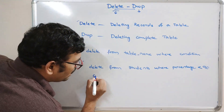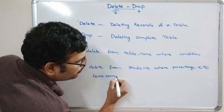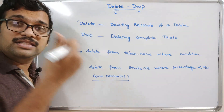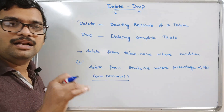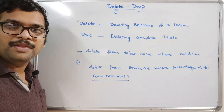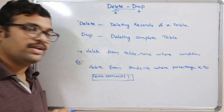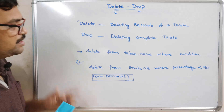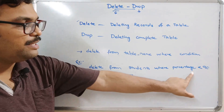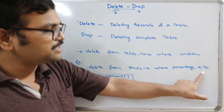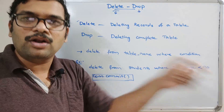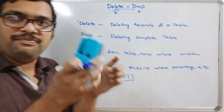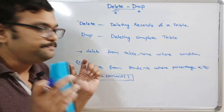After executing the delete query, we need to commit the connection. Unless you write the commit statement, the deletion will not be reflected permanently. Temporarily the values will appear deleted, but if you check the table they will still be there. So commit is compulsory in MySQL — it confirms the operation. You can also use conditions like roll number equal to 501, or s_name equal to a specific value.